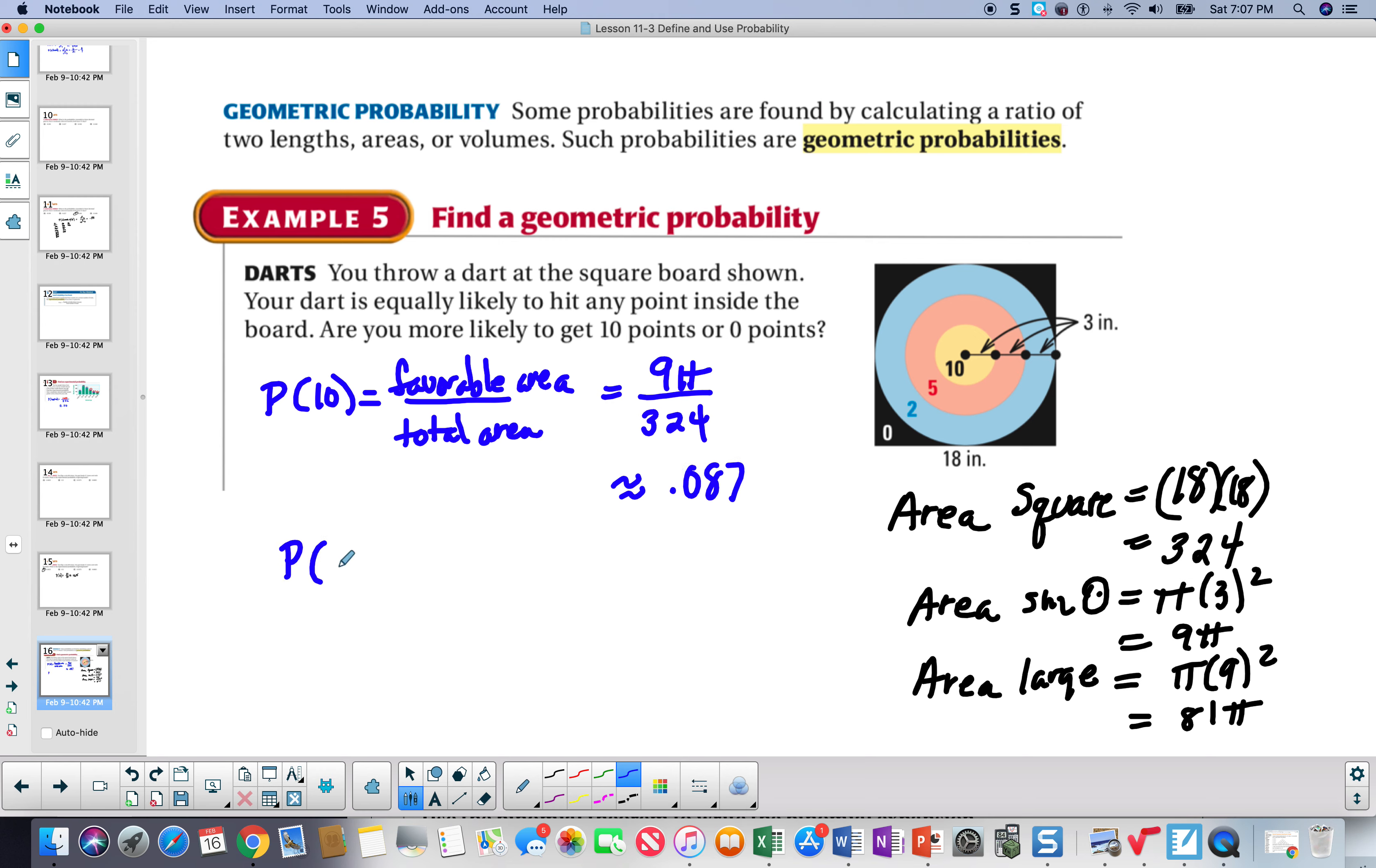Now, let's figure out the probability of getting a zero. And it's the same formula, favorable area with total area. So, it's 324. The favorable area, though, is this black area. And to get the black area, you're going to have to take the total area, which is 324. And you're going to have to subtract this big circle to get the leftover. And the big circle has 3, 6, 9, a radius of 9. So, this is going to be 81 pi. So, let's go ahead and put that in our calculator.